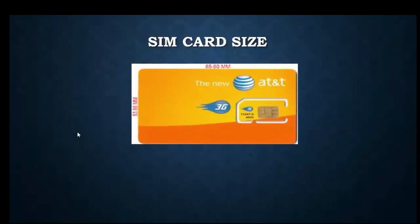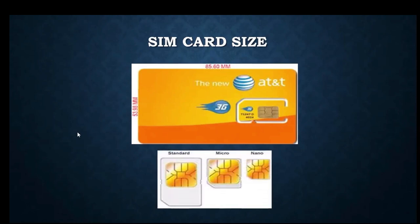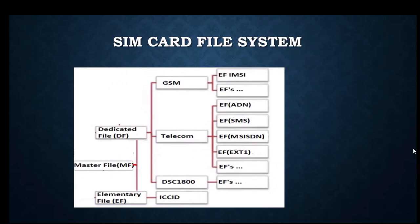The SIM generally comes in different sizes. At the beginning, SIM cards were the size of a credit card. With advancement of technology, sizes evolved to standard, micro, and nano. A SIM card maintains different kinds of information managed by a file system that arranges information in a hierarchical manner. At the top is the Master File, below which are Dedicated Files and Elementary Files.